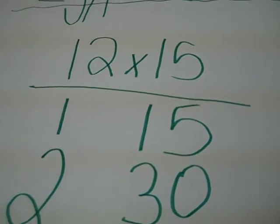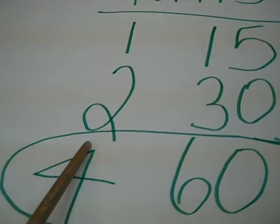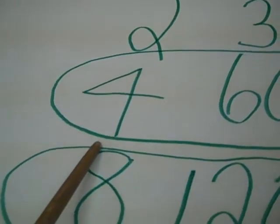In the 12 column, you put a 1, so you double it, then it goes to a 2, then a 4, then an 8.